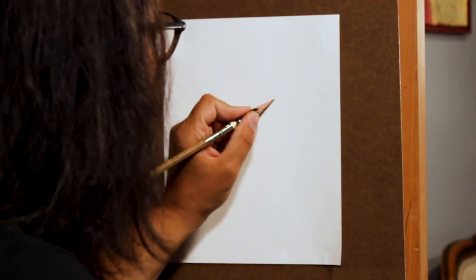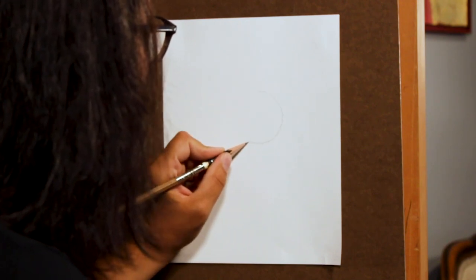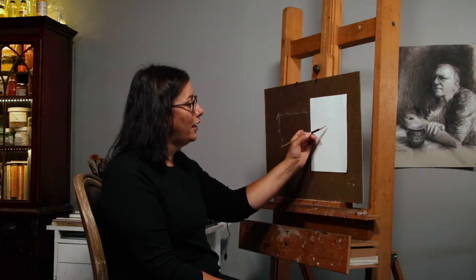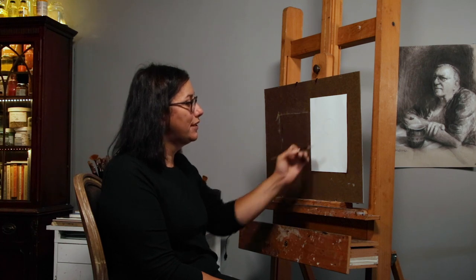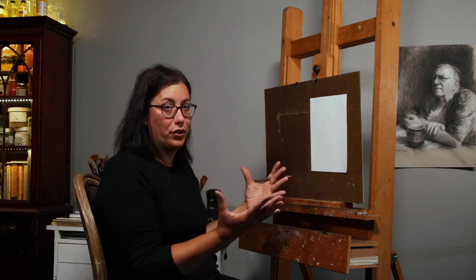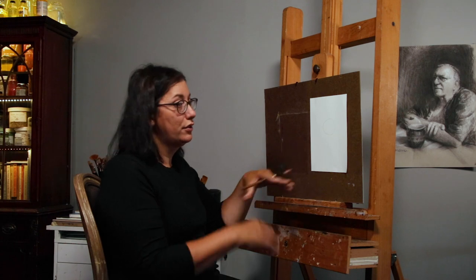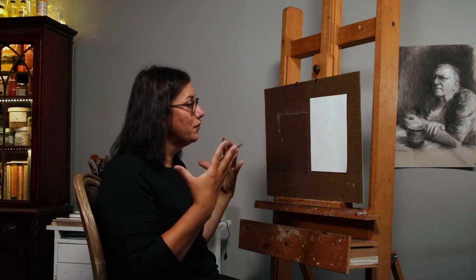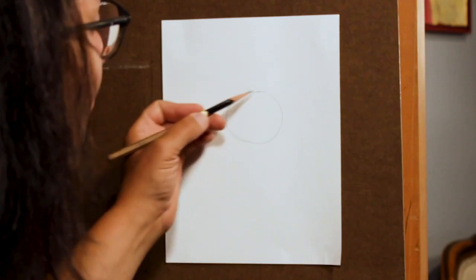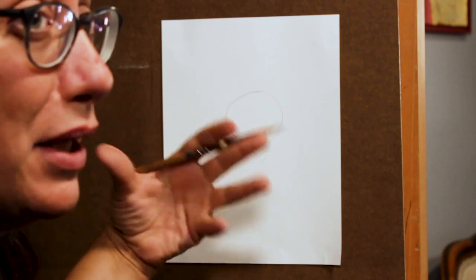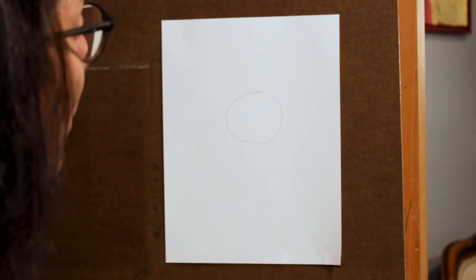So we're going to draw a circle. Now, why a circle? It symbolizes wholeness. Every point from the center is the same. It's everywhere we look in the world, from a wheel to the world itself. Circles are everywhere. It's a fundamental building block when it comes to drawing and painting.